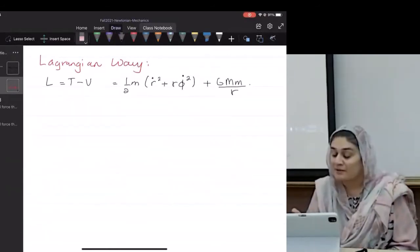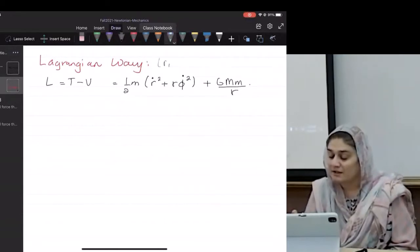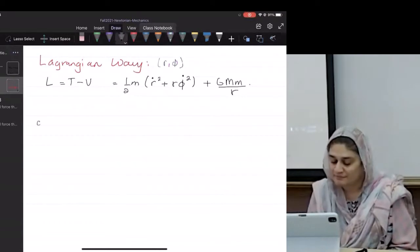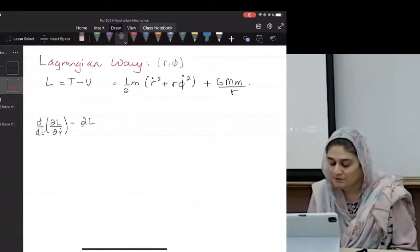So now we have two coordinates, right? R and phi. How many Lagrange equations should we get? One corresponding to R, and one corresponding to phi. Done.